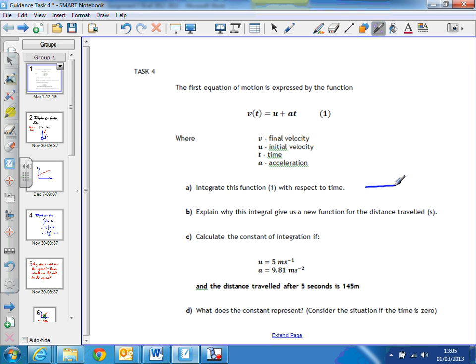Okay, now you go back and have a look at the task. It's a similar situation. You've got to integrate the function with respect to time. Explain why this integral gives us a new function which gives us the distance travelled s. And then you've got to calculate the constant of integration given that u equals 5 metres per second, a equals 9.81, and the distance travelled after 5 seconds is 145 metres. What does this constant of integration represent?